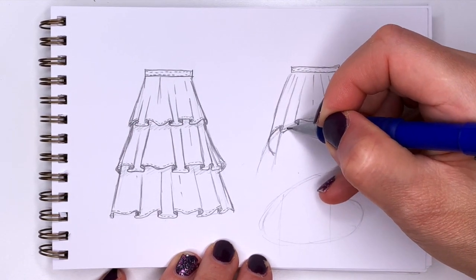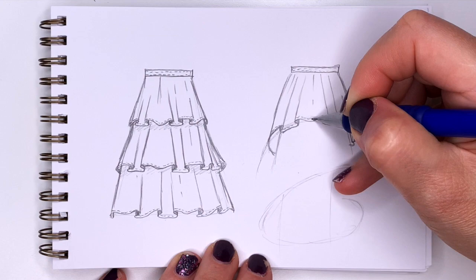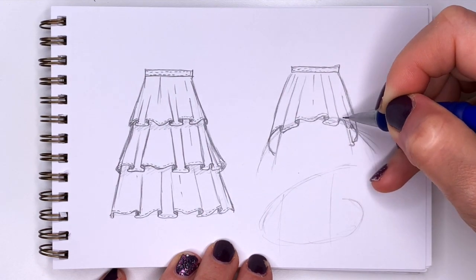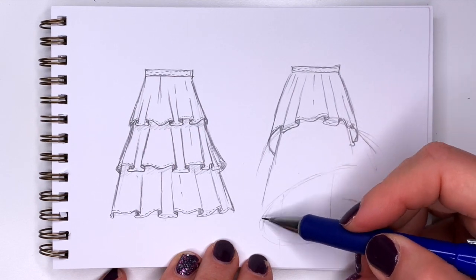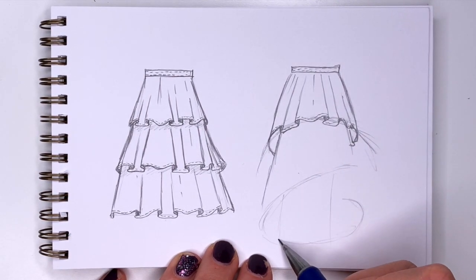And if you want to, little lines for the seam line. Now second tier goes down here. It loops behind.